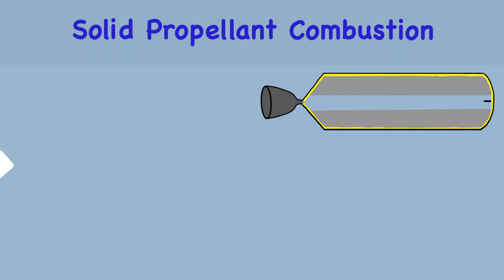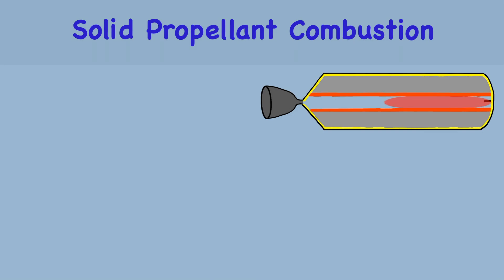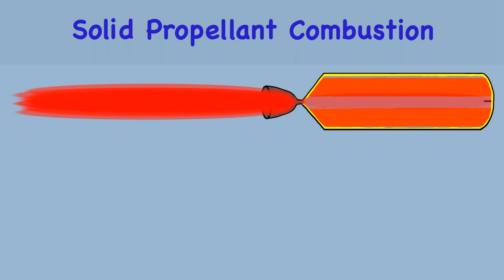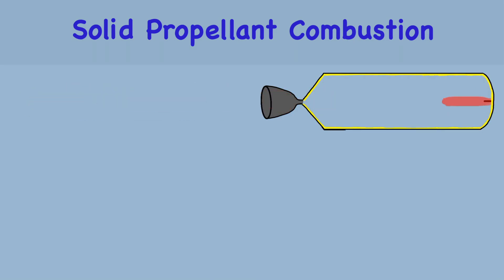To create combustion, the grain is sparked by an electrically activated igniter. Finally, the exhaust is directed out of the engine by the throat and nozzle.